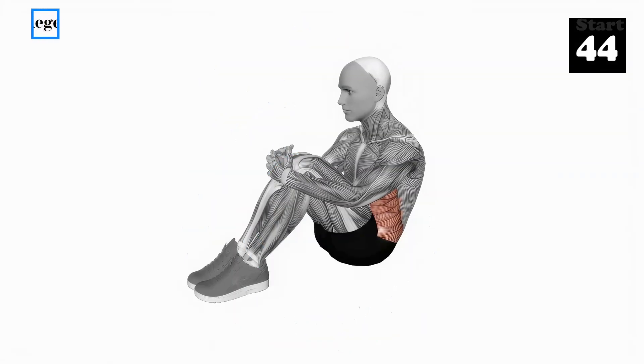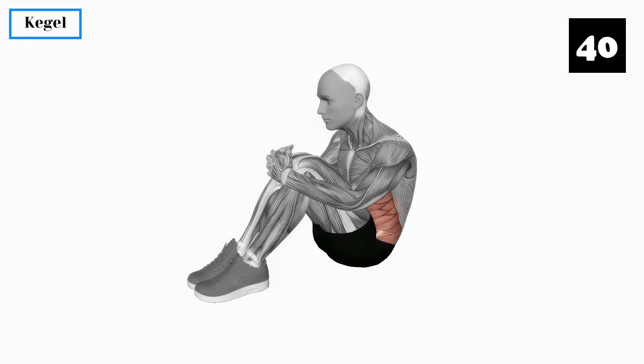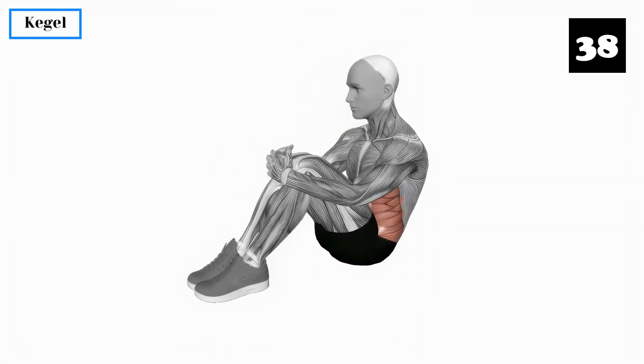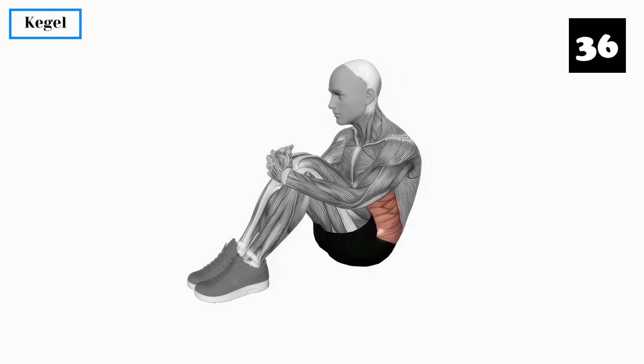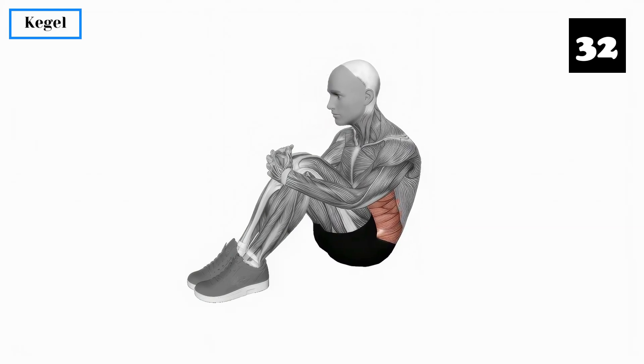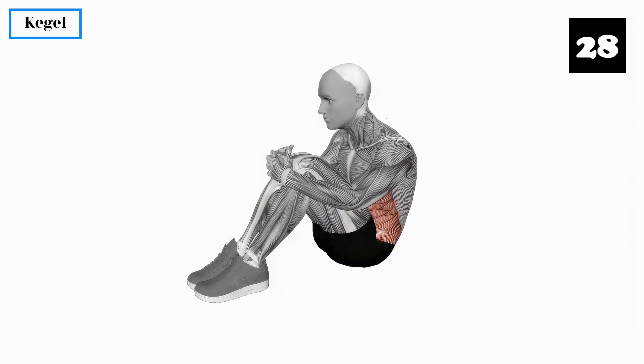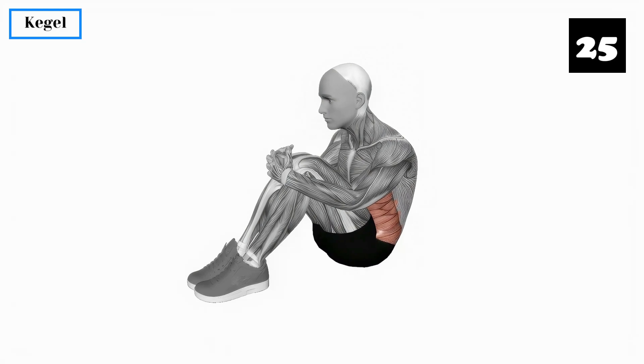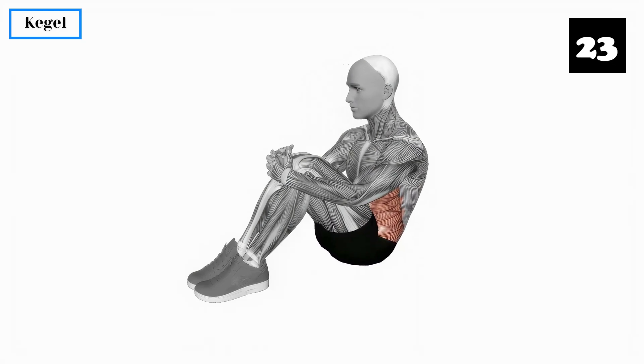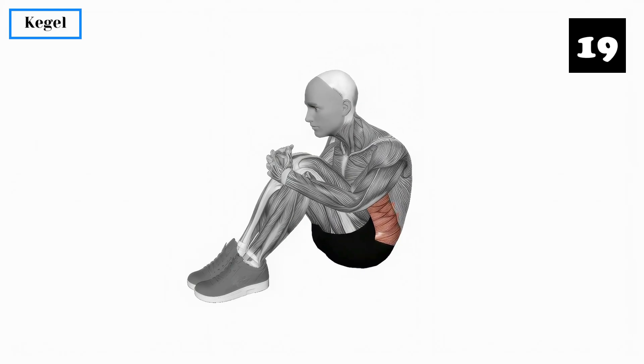Exercise 5: Kegels. Kegels are the most well-known pelvic floor exercises. To perform Kegels, simply contract and relax the muscles you would use to stop urine flow. Repeat this exercise in sets of 10, gradually increasing the duration of the contractions. Kegels strengthen the pelvic floor muscles, improving blood flow and supporting overall health.